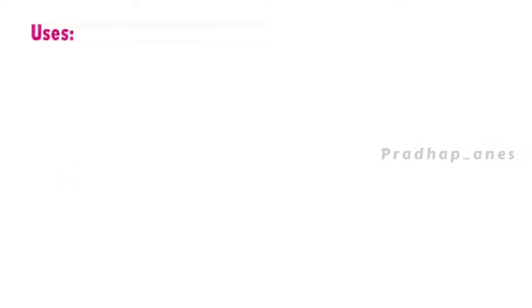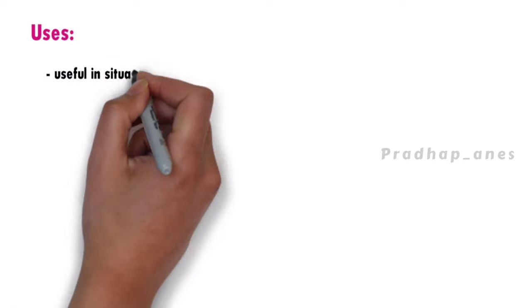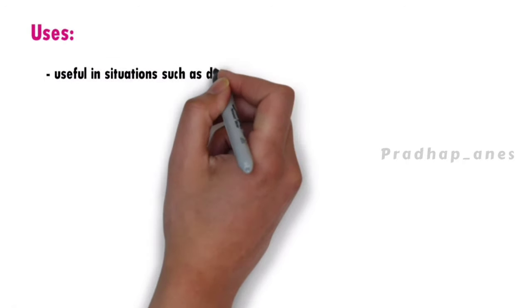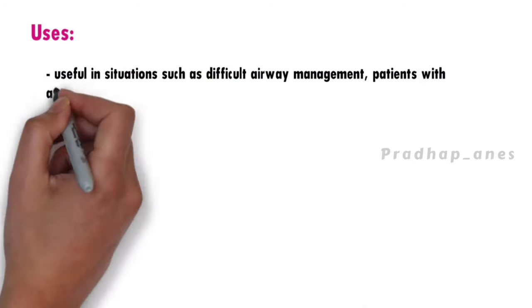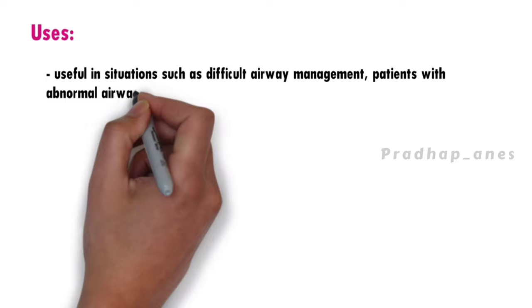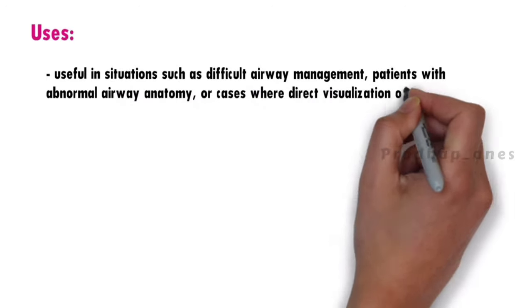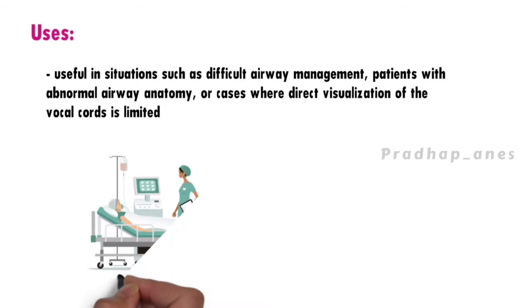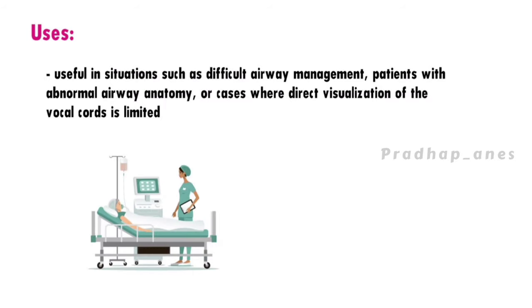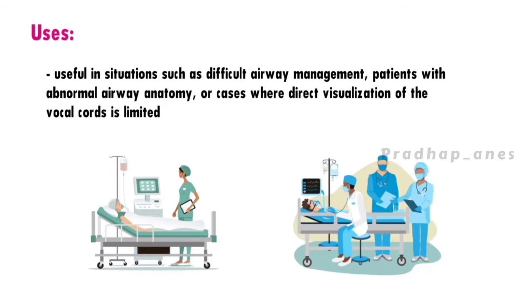Uses: The Bougie is especially useful in situations such as difficult airway management, patients with abnormal airway anatomy, or cases where direct visualization of the vocal cords is limited. It can be an essential tool in emergency medicine, anesthesiology, and critical care settings.